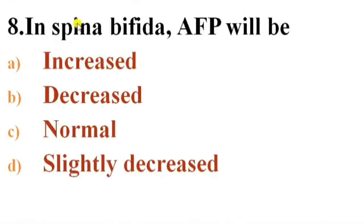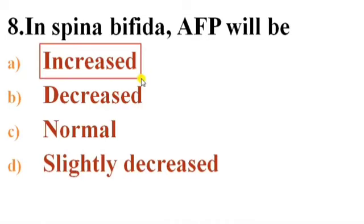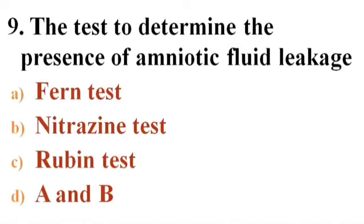Next question: In spina bifida, AFP — alpha-fetoprotein — will be — Options: A) Increased, B) Decreased, C) Normal, D) Slightly decreased. Answer is A — Increased. In spina bifida, alpha-fetoprotein will be elevated.